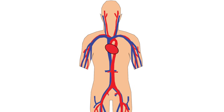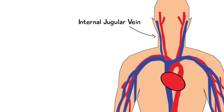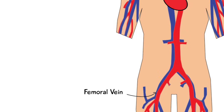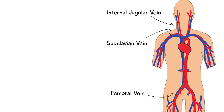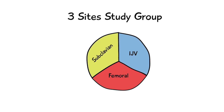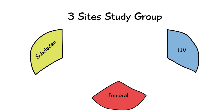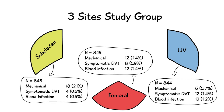The most common sites for central line placement are the internal jugular veins, the subclavian veins, and the femoral veins. With the use of ultrasound guidance techniques, the internal jugular vein has gained popularity as the preferred location. In order to identify which of these major vessels was safest to access, the three-site study group conducted a multi-centered randomized controlled trial comparing central lines placed in the internal jugular veins, femoral veins, and subclavian veins for rates of complications. Results published in the New England Journal of Medicine showed a significantly decreased incidence of symptomatic deep venous thrombosis and bloodstream infections with the use of a subclavian vein site.